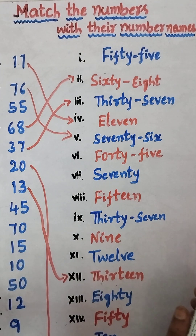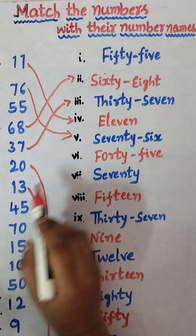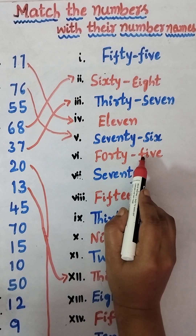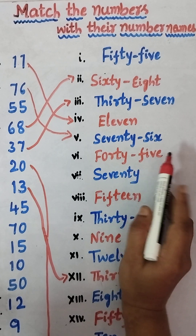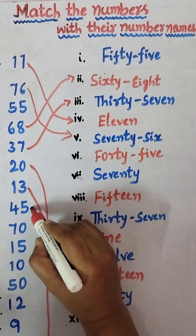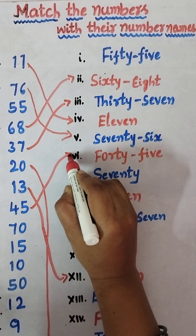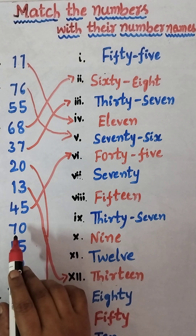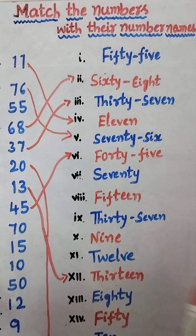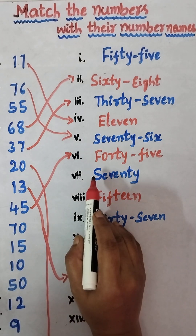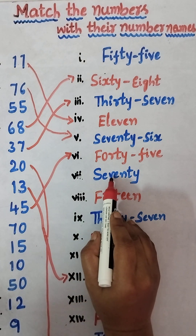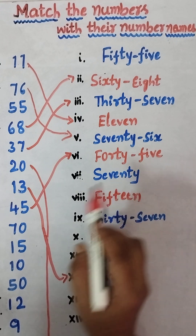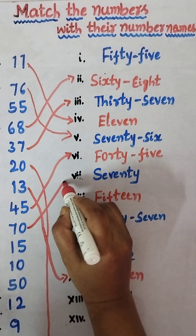Next, 45 — F-O-R-T-Y F-I-V-E, forty-five. So we match 45 here. Next, 70 — S-E-V-E-N-T-Y, seventy. We match 70 here.